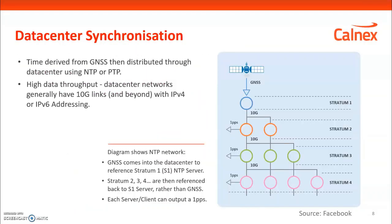Let's take a more detailed look at Sentinel for testing NTP and PTP. This diagram represents Facebook's data center timing deployment. They use GNSS as a source of time, then NTP across the network to deliver timing to all of the fabric of their data center. They use different tiers of clocking — stratum 1, stratum 2, and so on. Depending on the tier, they have a different level of clocking, and they want to measure and guarantee the level of accuracy throughout their data center.